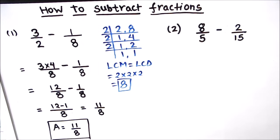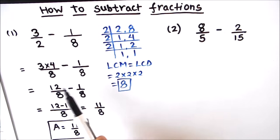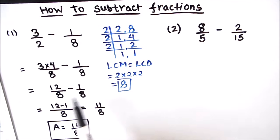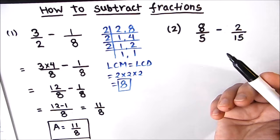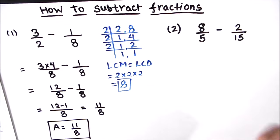So this is how we subtract two fractions. First we make the denominators of the two fractions common, then we simplify and subtract. Let's move on to our second example.